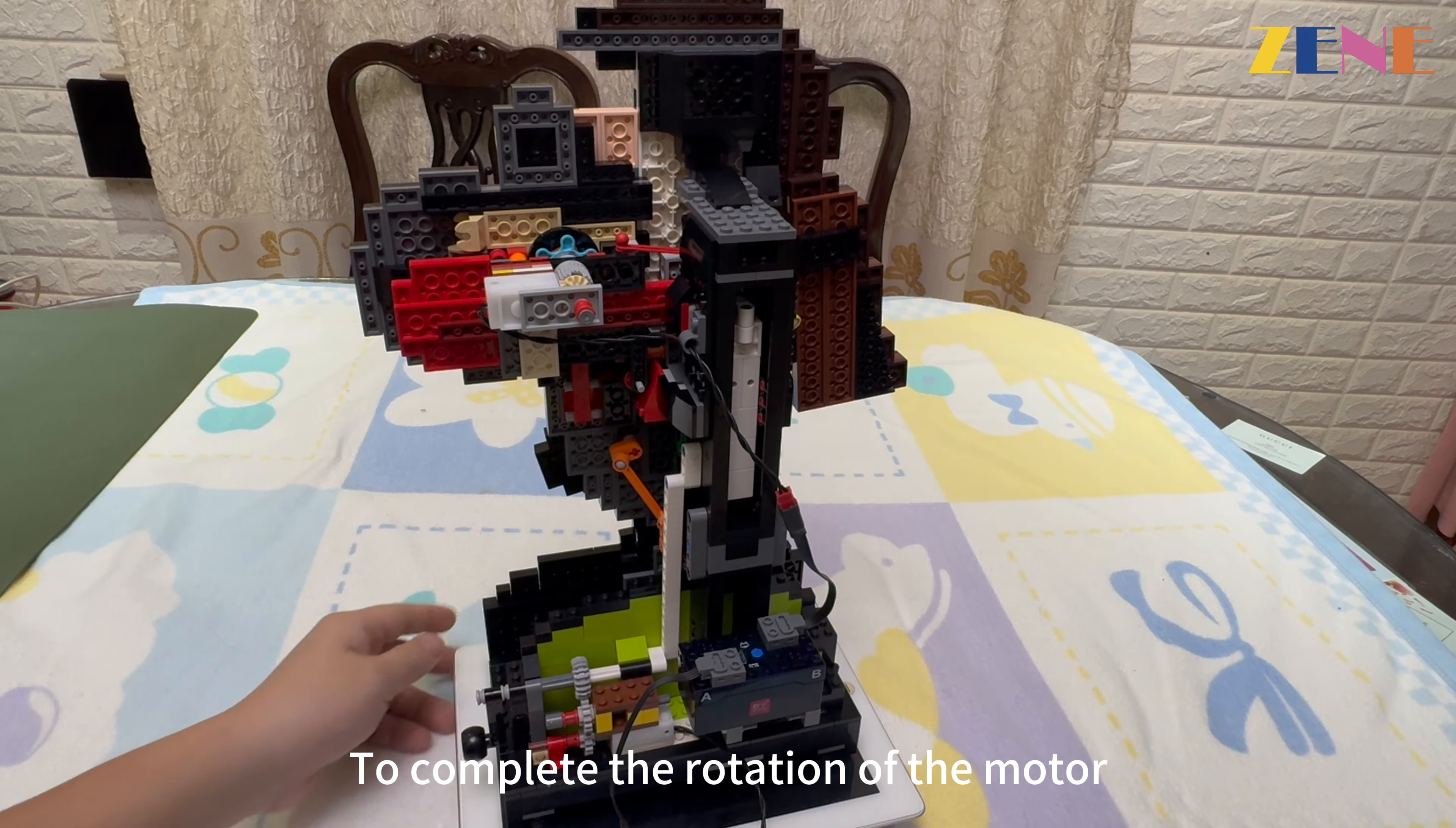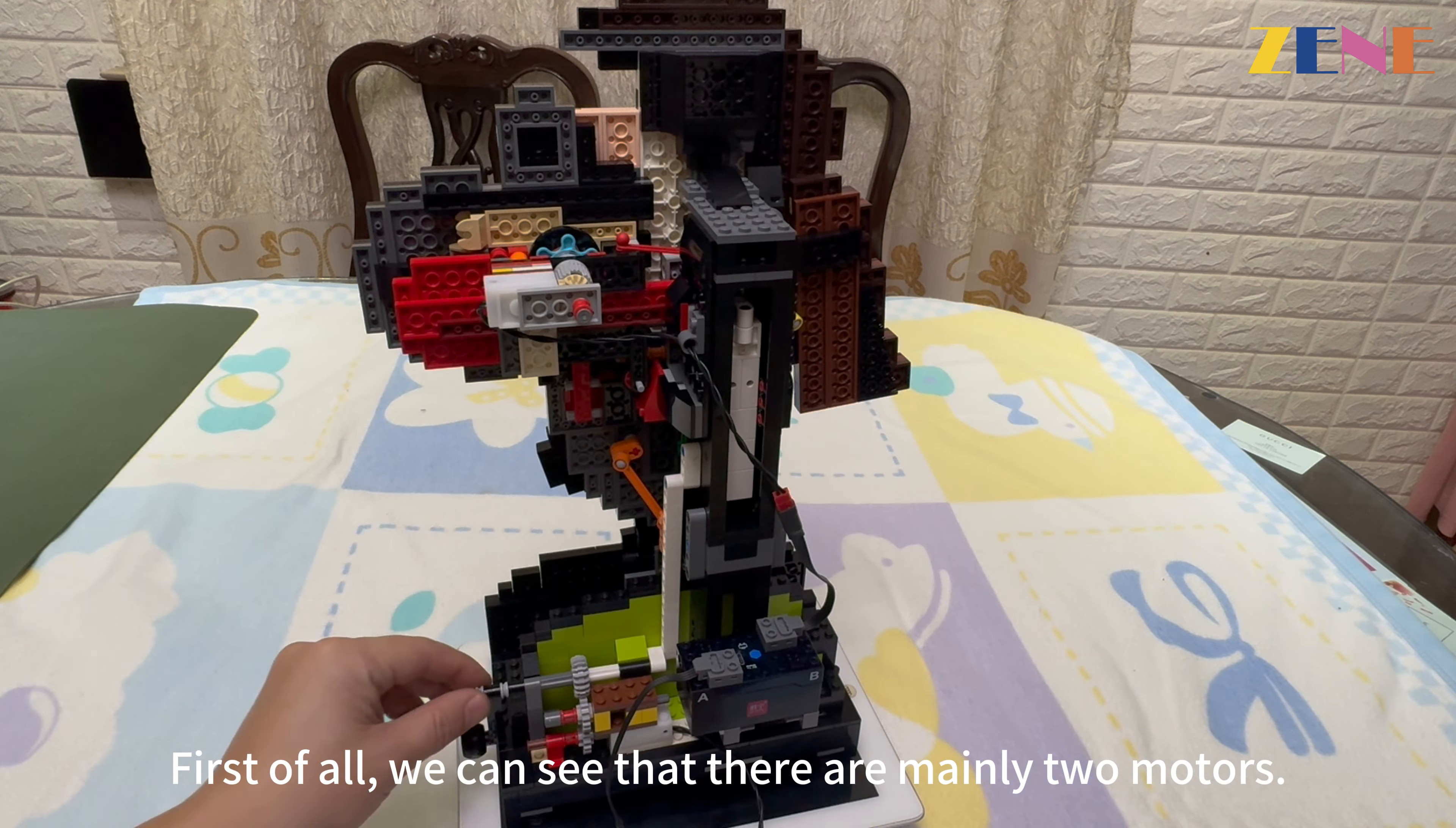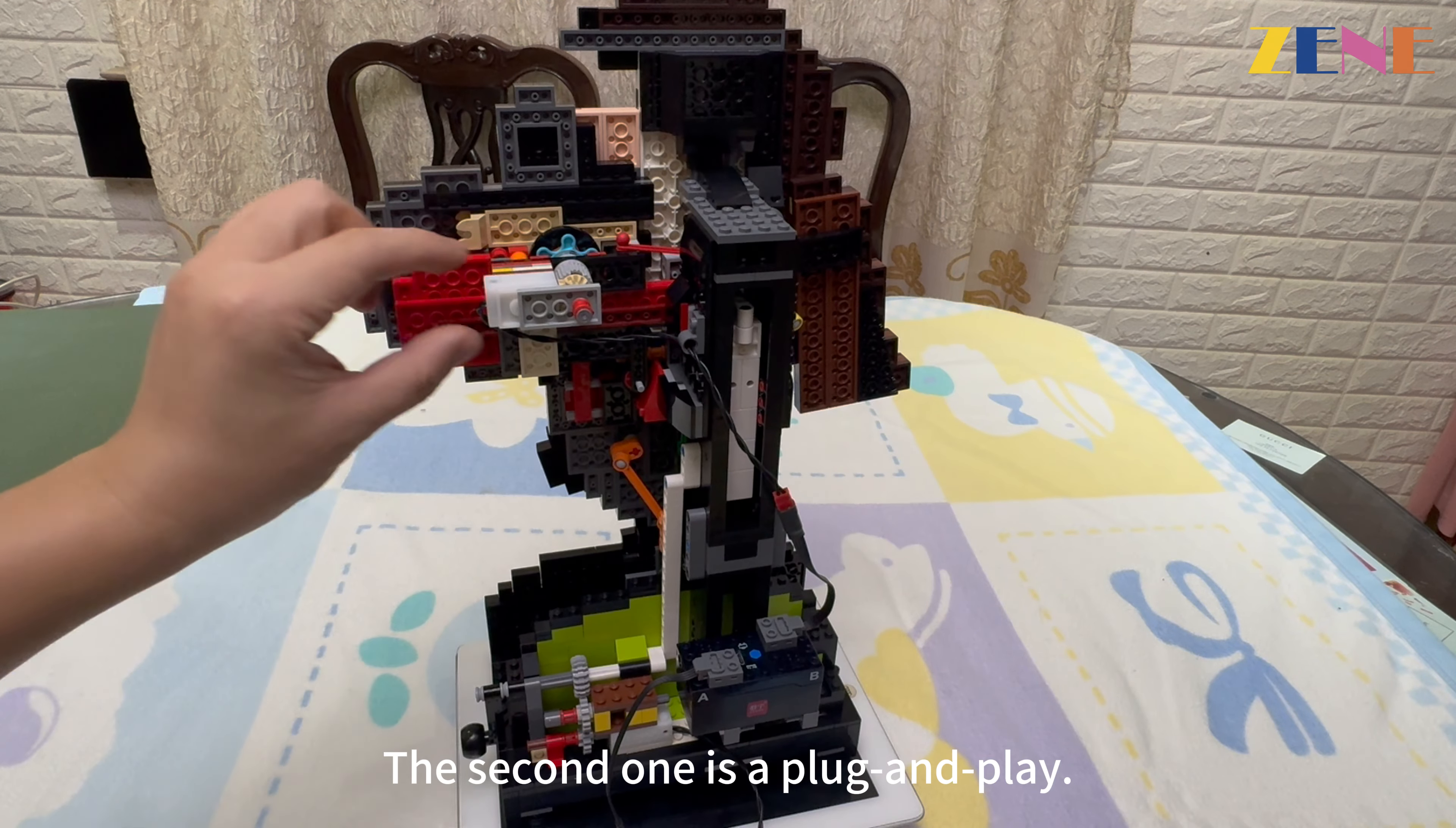First of all, we can see there are mainly two motors: a rocker motor and a motor at the top that controls the movement of the tongue.